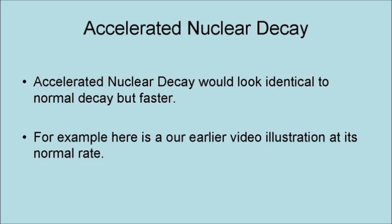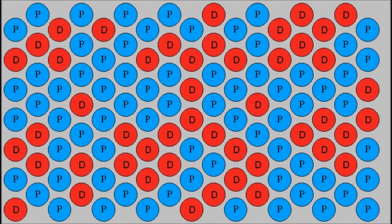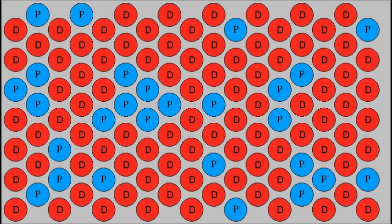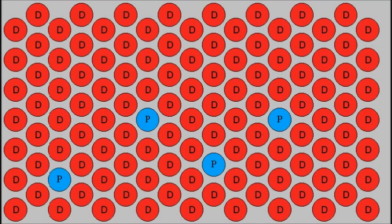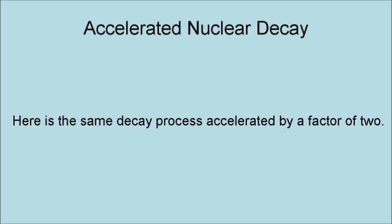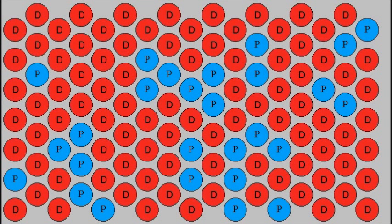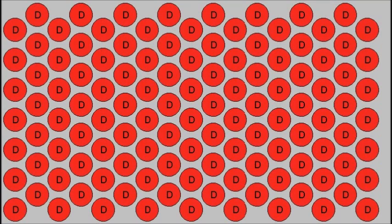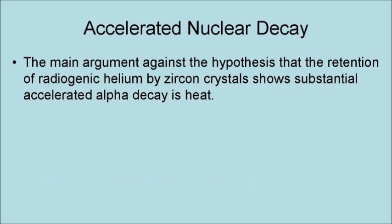For example, here is our earlier video illustration at its normal rate, and here is the same decay process accelerated by a factor of two. The main argument against the hypothesis that the retention of radiogenic helium by zircon crystals shows substantial alpha decay is heat.